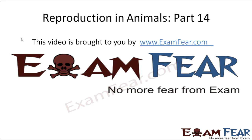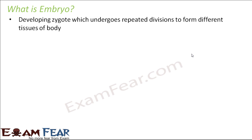This video on reproduction in animals part 14 is brought to you by ExamFear.com. Now we will talk about embryo development. You can distinctly see the structures — placenta and the umbilical cord — and understand how the embryo develops. First of all, what is an embryo? It is a developing zygote which undergoes repeated divisions to form tissues of the body.